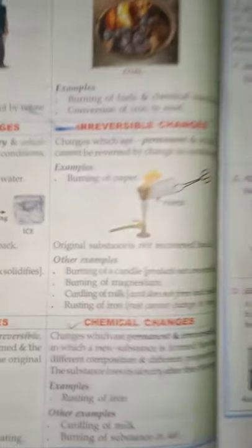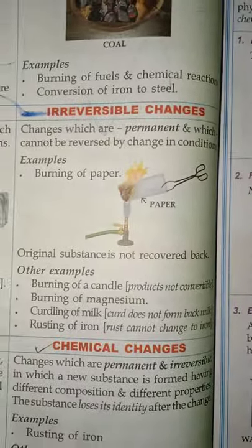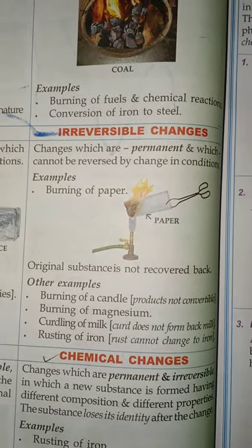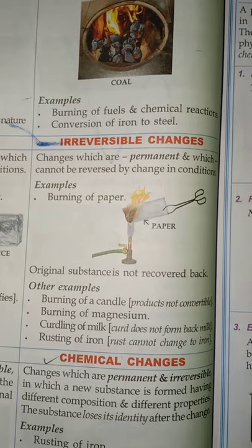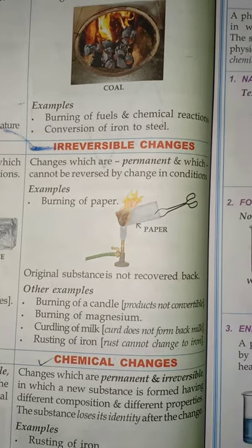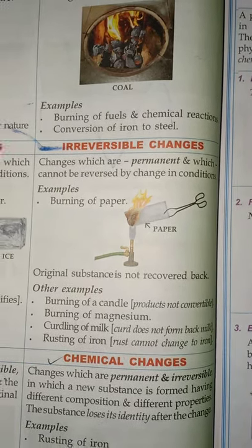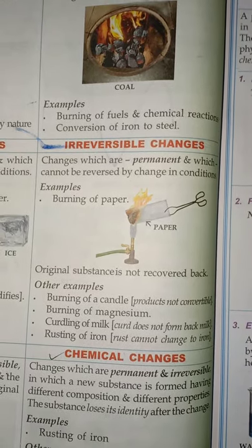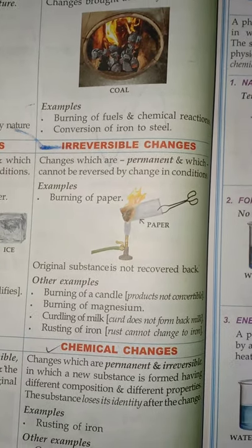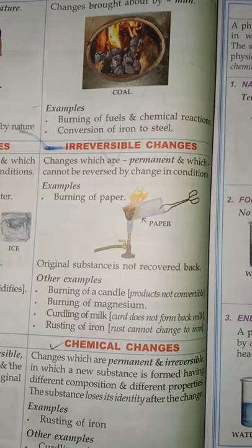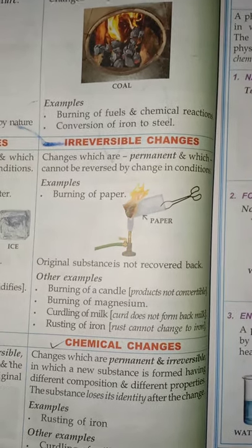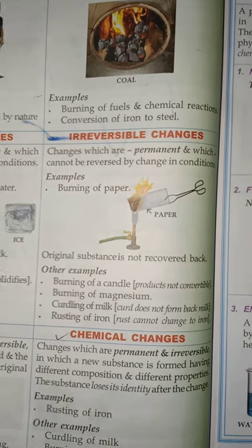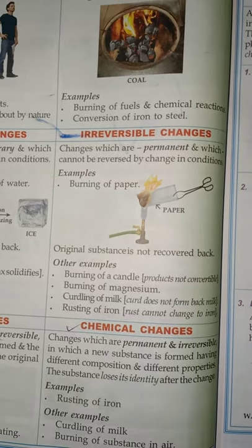Moving to irreversible change — these are permanent changes that cannot be brought back to the original state by reversing the conditions. For example, when you burn paper it converts into ashes; whatever you do, you won't get back the paper again. So burning of candle or magnesium, curdling of milk, rusting of iron — these all are irreversible changes.